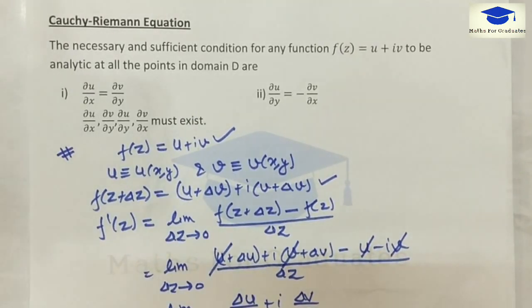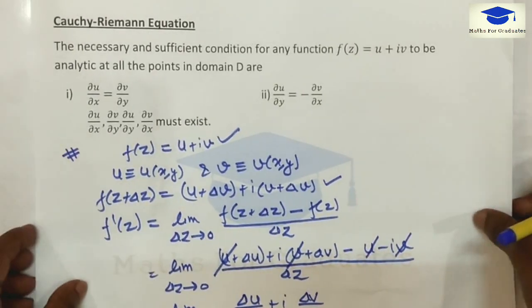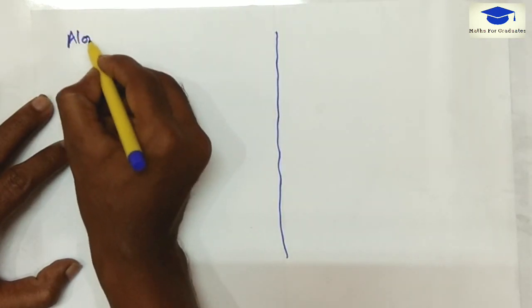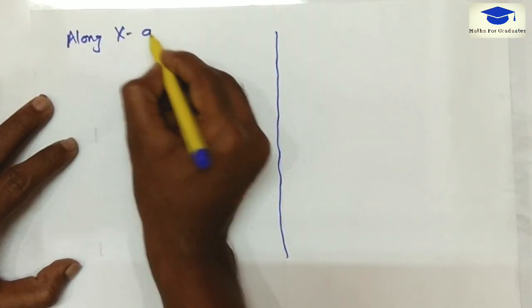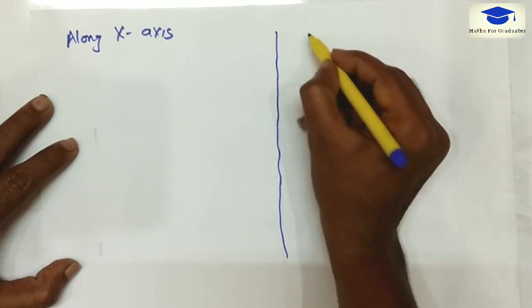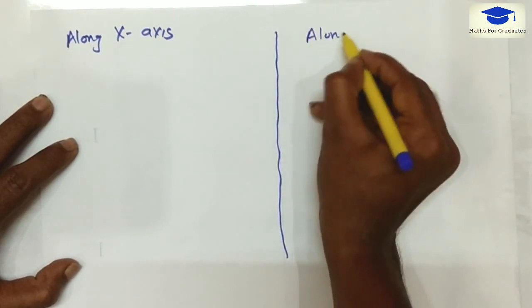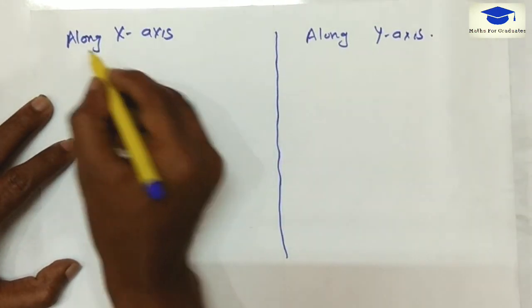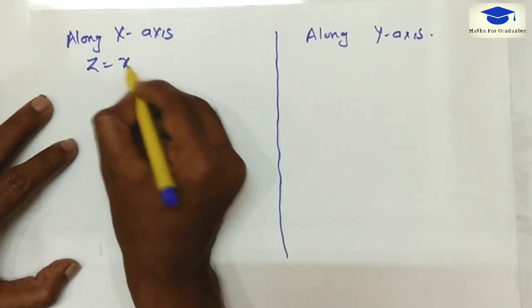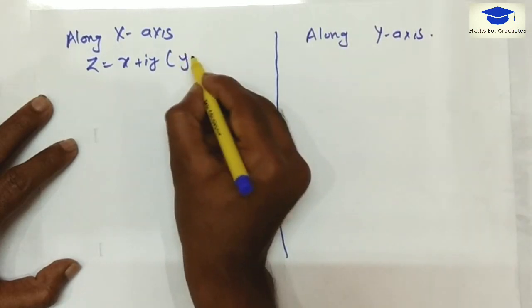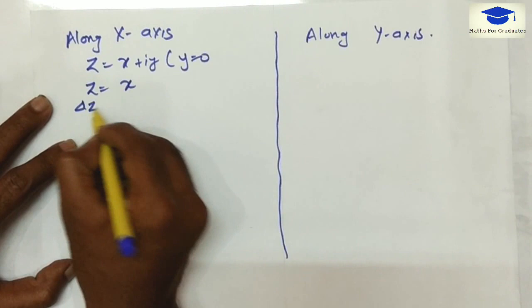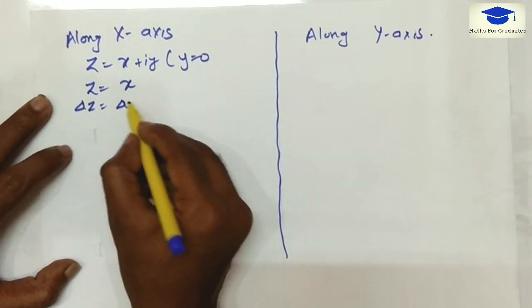Now, Δz can approach 0 in two ways: either along the x-axis or along the y-axis. Along the x-axis, z = x + iy, and for the x-axis y is 0, so z equals x and Δz equals Δx.